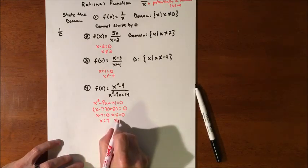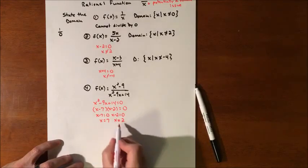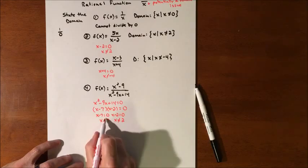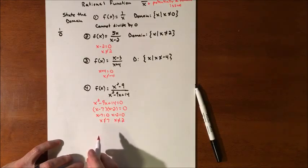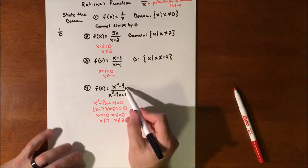But those solutions to the quadratic end up being the numbers that we can't use. So X cannot equal seven, and X cannot equal two. So everything else is okay. Again, the numerator doesn't have anything to do with it.